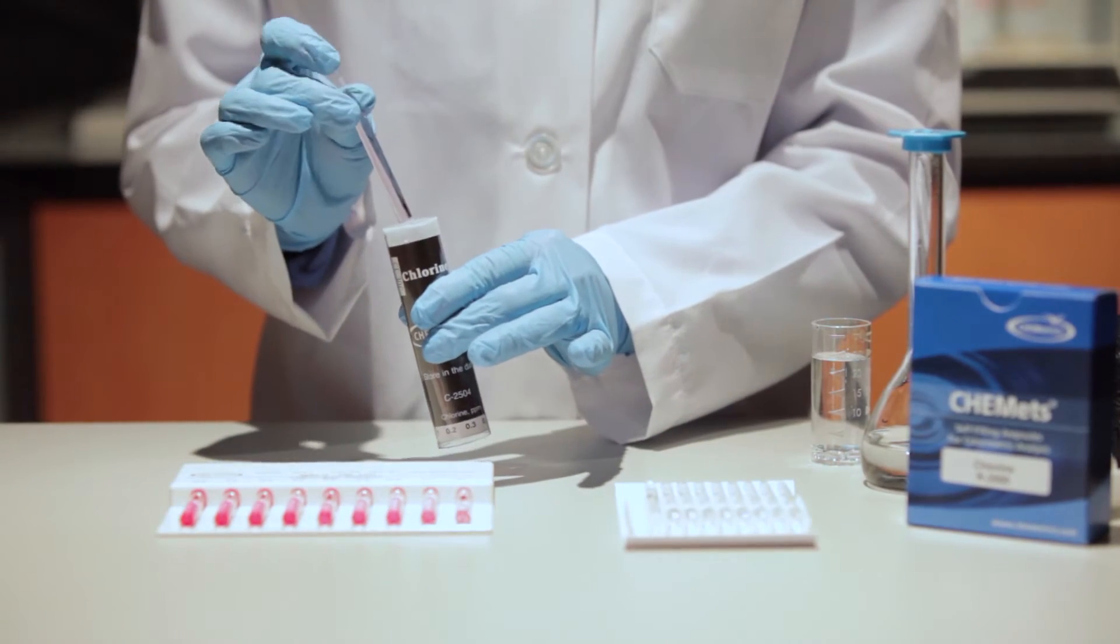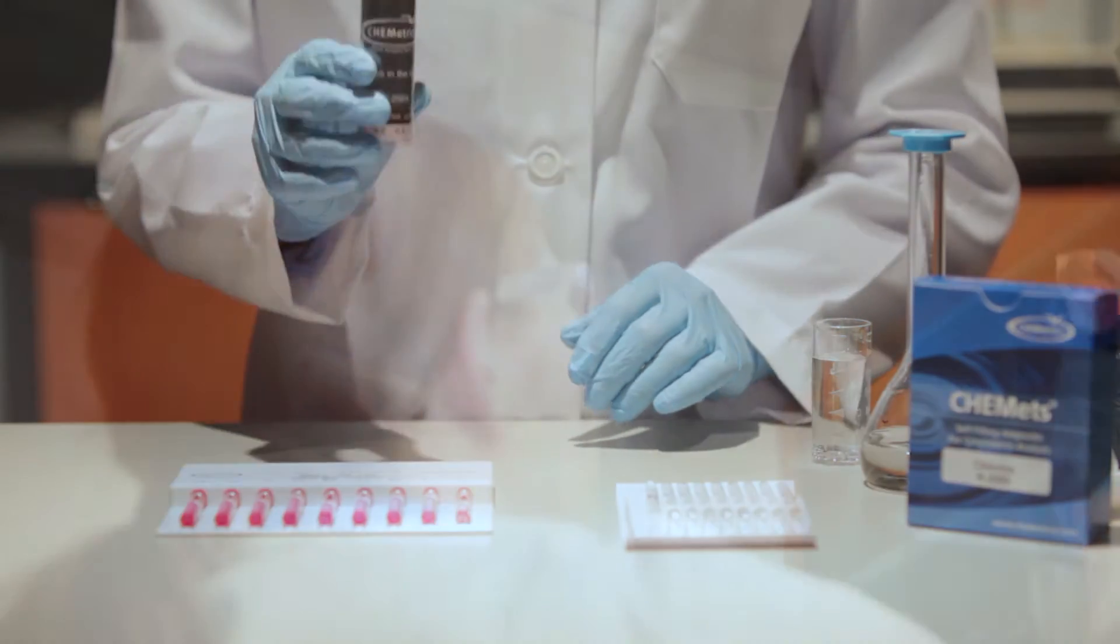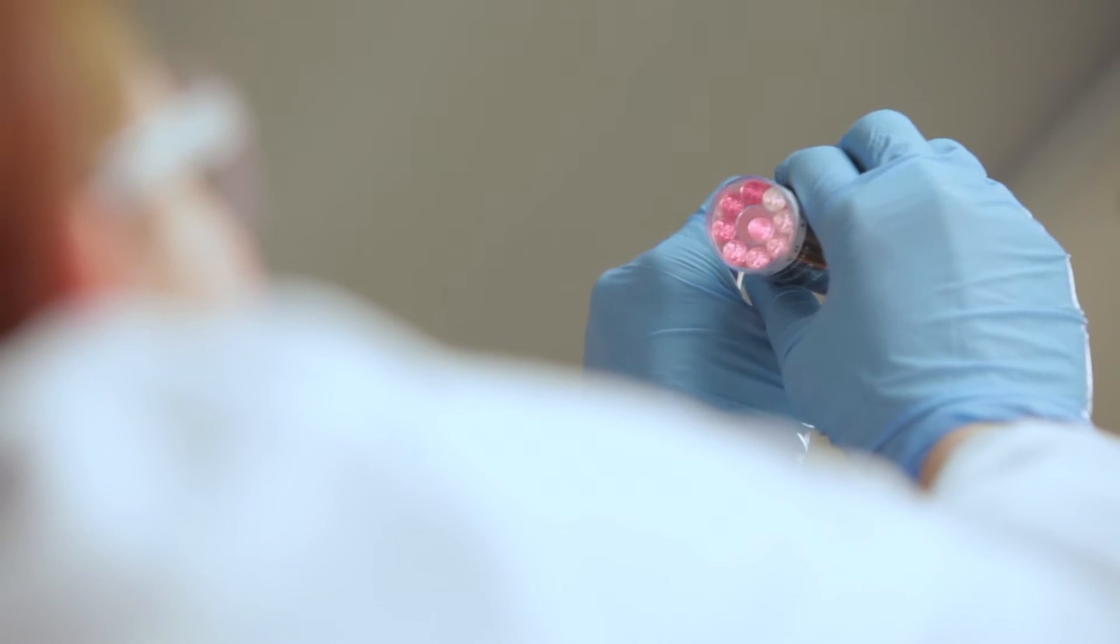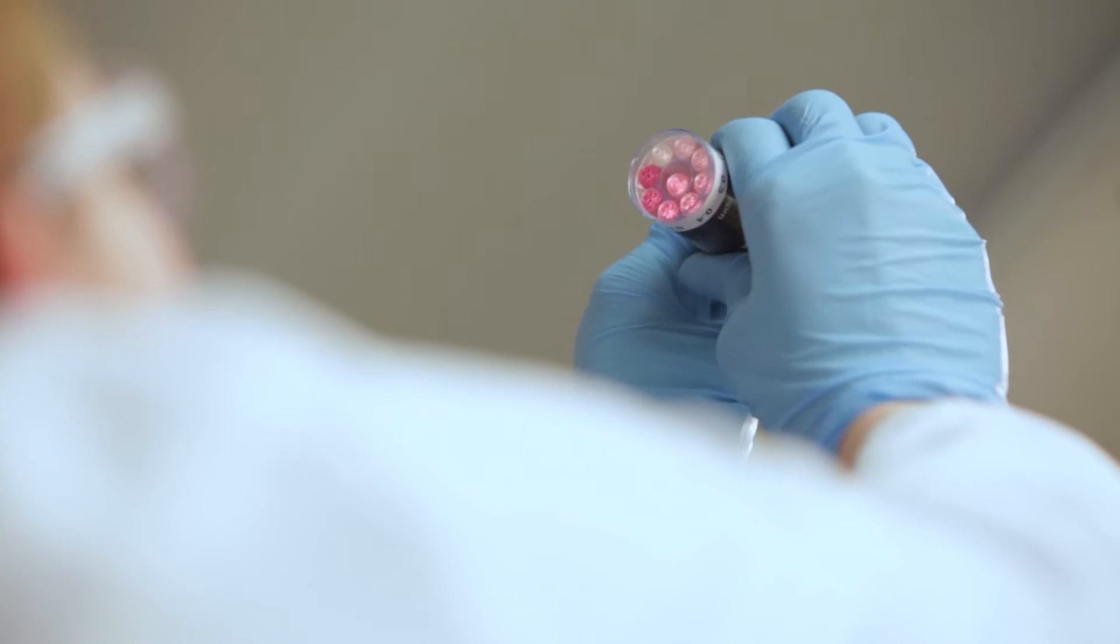For lower concentrations, use the round comparator by placing the ampule into the center tube. Direct the top of the comparator up toward a source of light while viewing from the bottom. Rotate the comparator until the color standard below the ampule shows the closest match. Concentration values are printed along the bottom edge of the comparator label.